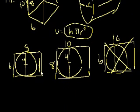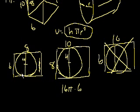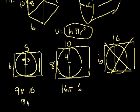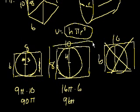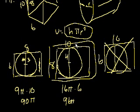For the 8-by-10 base case: radius is 4, so volume = 16π times height 6 = 96π. For the 6-by-8 base case: radius is 3, so volume = 9π times height 10 = 90π. So 96π is the maximum. This confirms we maximize by maximizing the radius, giving us a radius of 4. That's choice B.